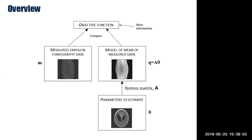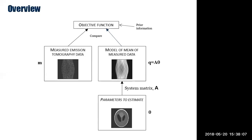We can also inject some prior information about what we expect that image to look like. We use an algorithm which modifies theta such that when forward modeled and compared with the measured data vector M, it gives a better evaluation. In PET, we're looking for a parameter vector theta which, when mapped through A, gives a higher value of the so-called Poisson log likelihood.